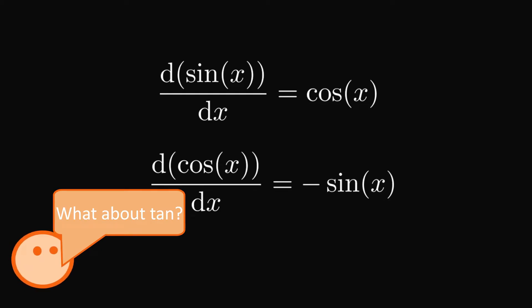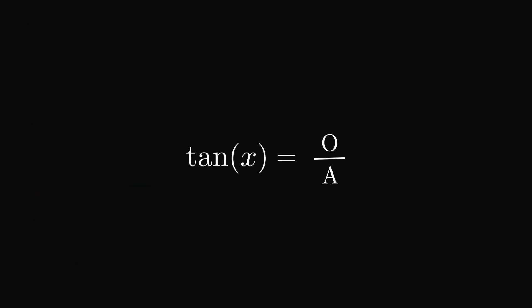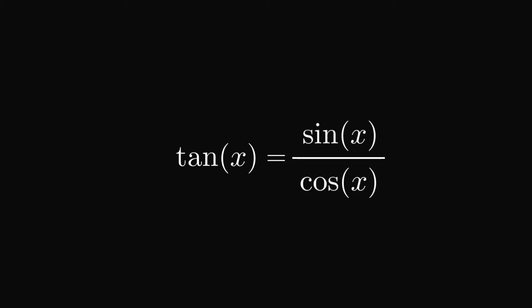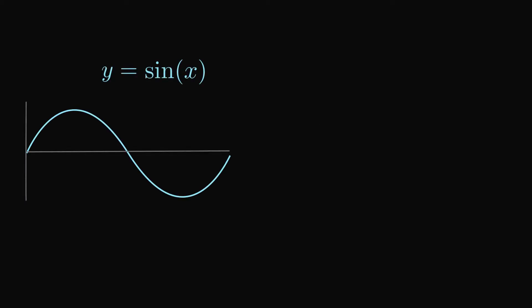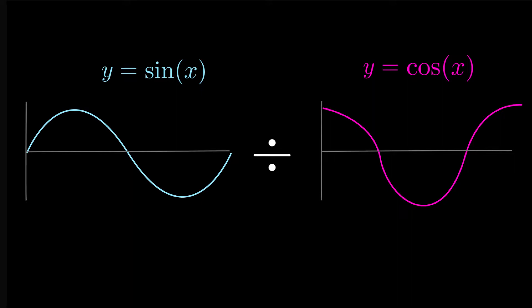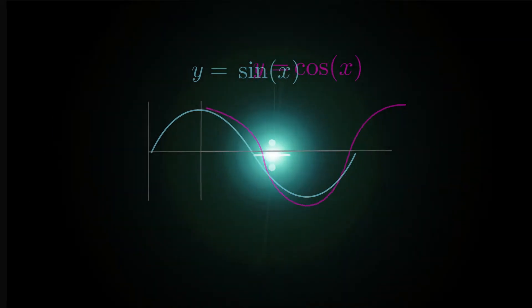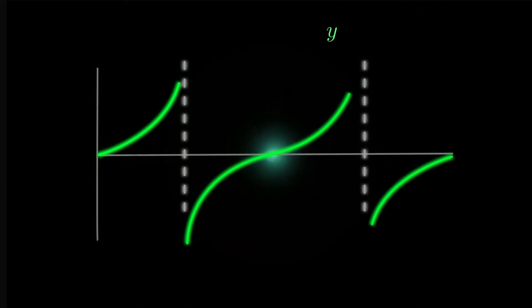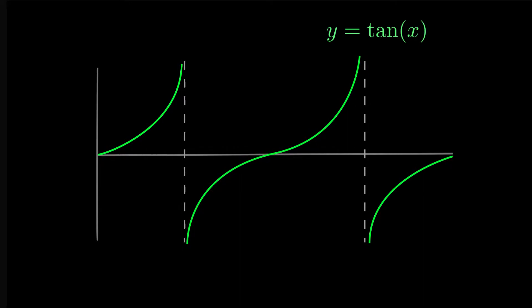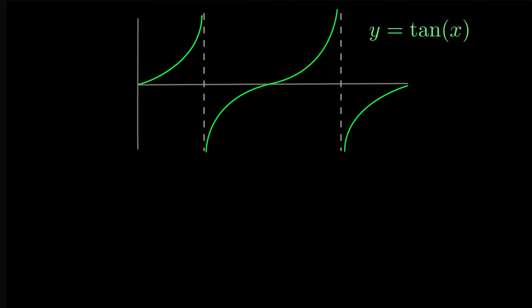But what about tan? We have that tan x equals opposite divided by adjacent, which can be written as (o/h) divided by (a/h) — the h's cancel — and this is just sine x over cosine x. So if we take our values of the sine function and divide by our values of the cosine function, we get the famous graph of y equals tan x, where the dashed lines are our asymptotes.